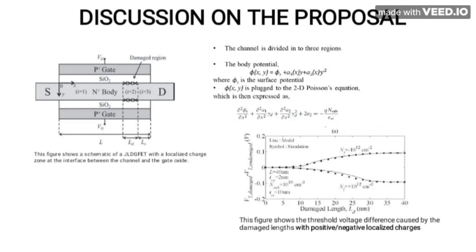Discussions on the proposal: the first figure shows the schematic of the junctionless double gate field effect transistor with a localized charge at the interface between the channel and the gate oxide. The channel is divided into three regions: source, drain, and n-plus body. The body potential phi(x,y) = phi_s + a1(x)y + a2(x)y², where phi_s is the surface potential. The body potential is expressed as a quadratic equation in terms of surface potential.